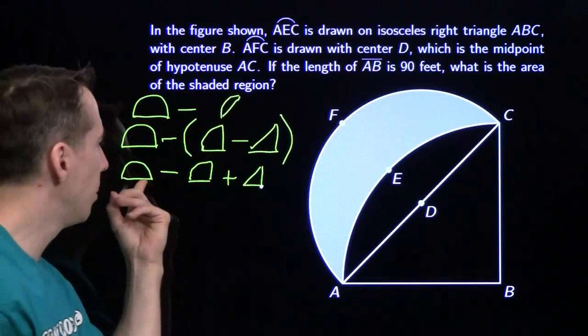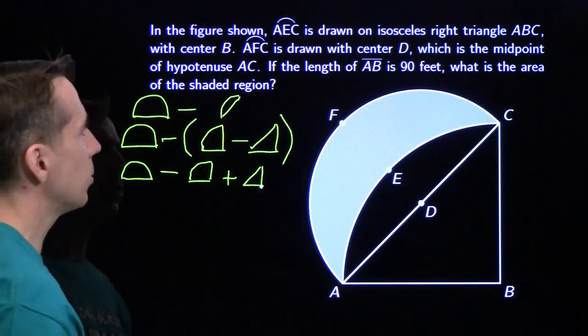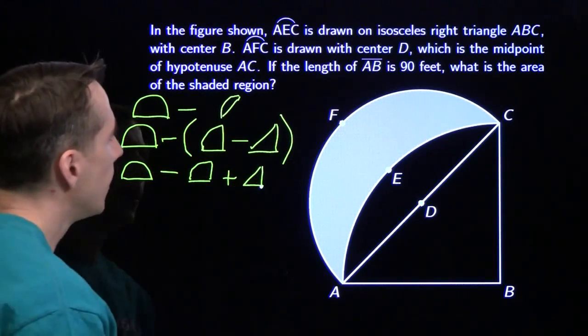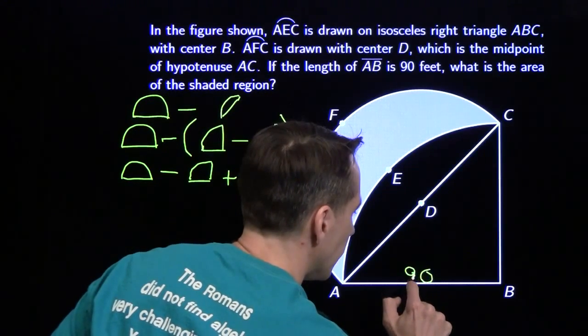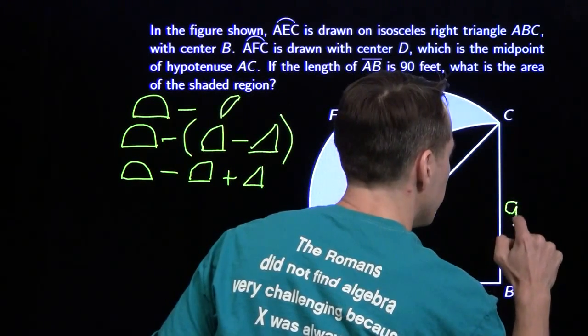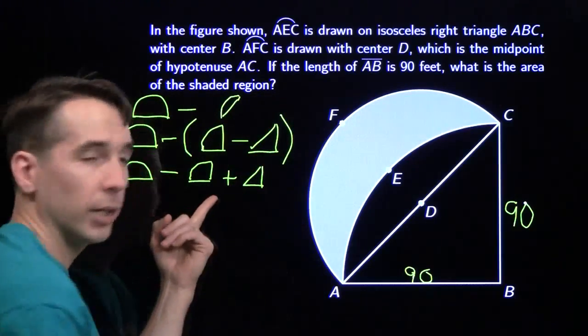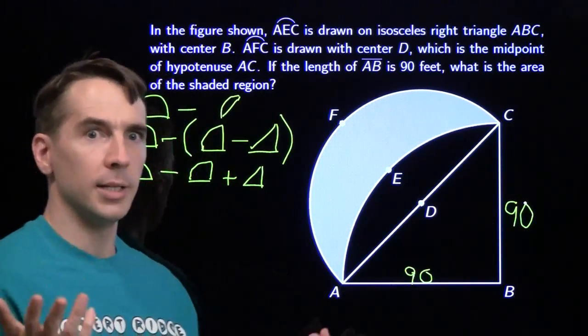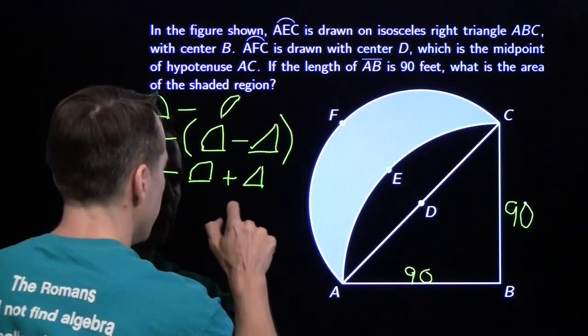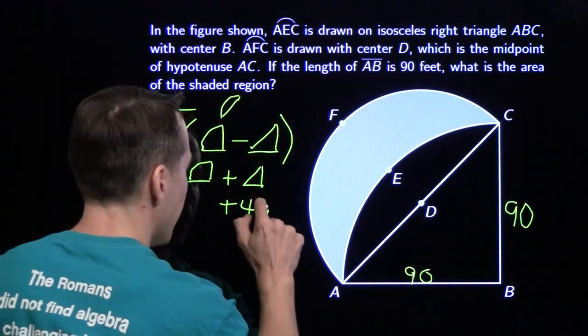Now we need to turn it into a number, which means we have to actually read the question. We've got, this is 90, this is 90. That gives us the triangle right away. The triangle is 90 times 90 divided by 2. 90 times 90 is 8,100 divided by 2, that gives us 4,050.